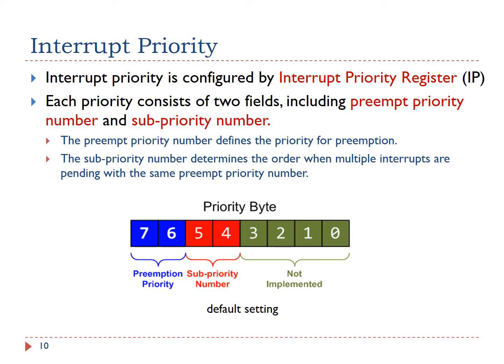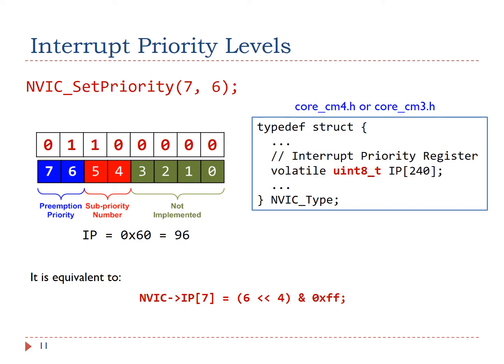The preemption priority defines whether an interrupt can preempt an already executing interrupt. Sub-priority determines which interrupt is handled first when two interrupts of the same preemption priority arrive simultaneously — the interrupt with the lower sub-priority value is handled first. The priority is stored as the most significant four bits of the interrupt priority byte. For example, the statement NVIC_SetPriority(7, 6) sets the priority byte of interrupt 7 to 0b01100000 in binary, or 96 in decimal.